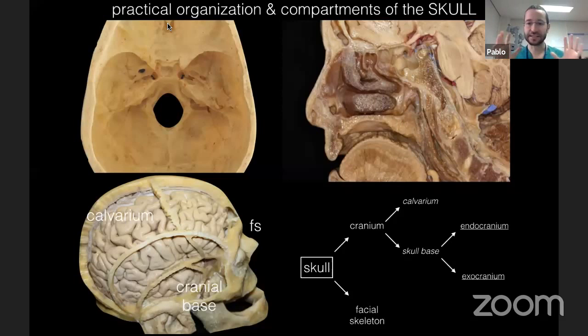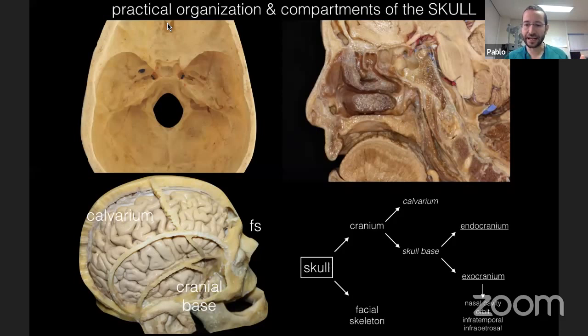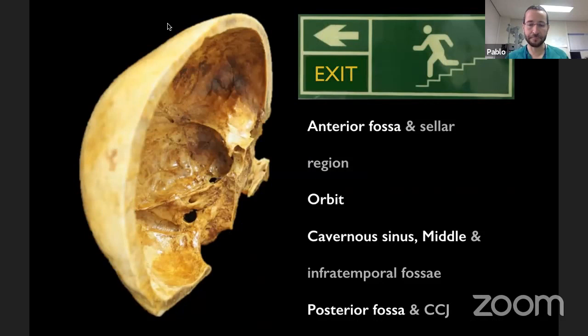So we have the skull base with an endocranium, which is the inner aspect, and the exocranium, which is the outer aspect. Both sides are connected through fissures and canals to the nasal cavity, orbit, infratemporal and infrapetrosal fossa. Looking at the endocranium, the inner aspect of the skull base, we can easily divide it into the anterior fossa, the middle fossa, and the posterior fossa, each related to different parts like the orbit, the infratemporal fossa, and the cranioservical junction.